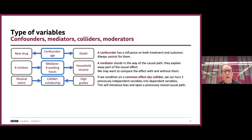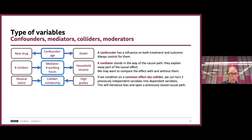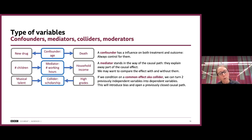The third type is the collider — the common effect. It's the reverse of the confounder: arrows point towards the collider. If you control for a collider, you take two previously independent variables and make them dependent, introducing bias and opening a previously closed causal path. For example, in a total population, musical talent and high grades at school are completely independent. But if you control for a school that gives scholarships for either outstanding musical talent or outstanding grades, you've created a spurious relationship. You should never control for a collider.